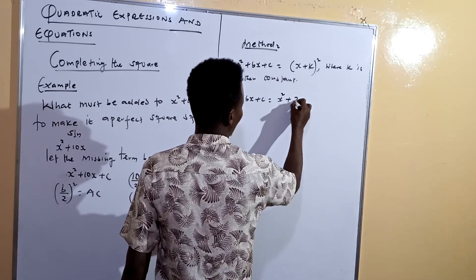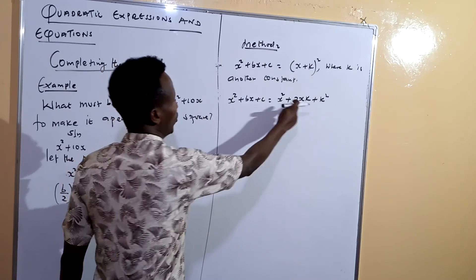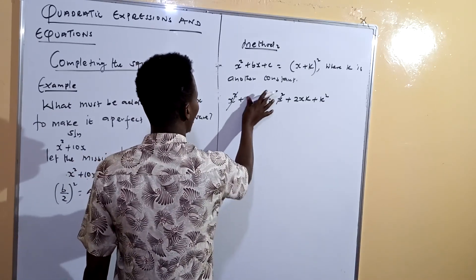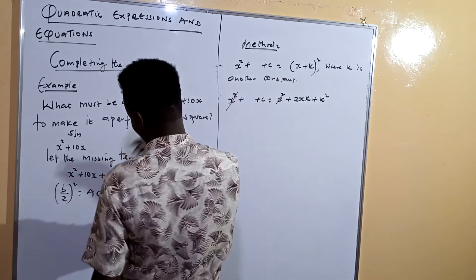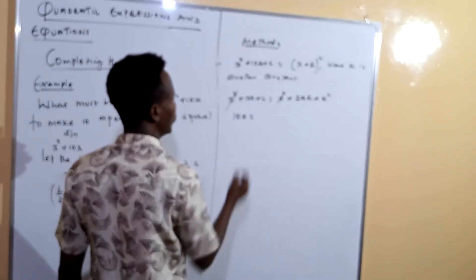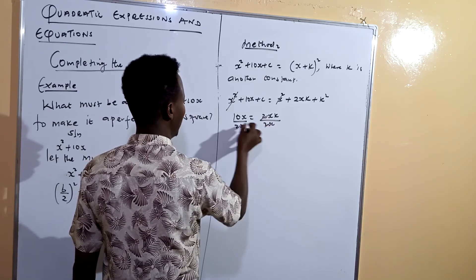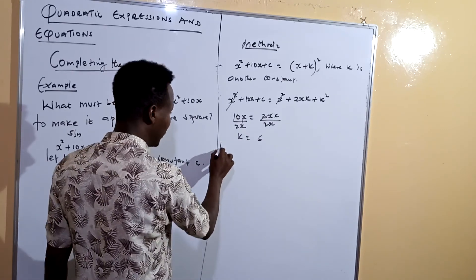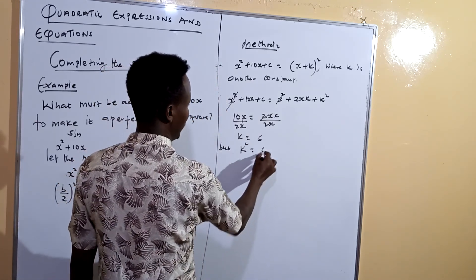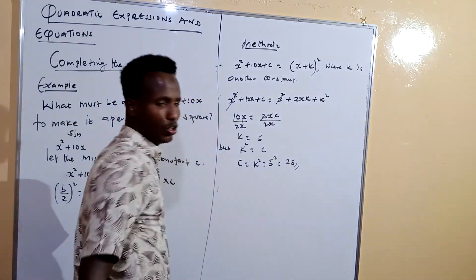Expanding (x plus k) squared gives x squared plus 2xk plus k squared. Matching coefficients, since our expression has 10x, we say 10x equals 2xk, so k equals 10 divided by 2, which is 5. Then k squared equals c, so c equals 5 squared equals 25. This confirms our answer of 25.